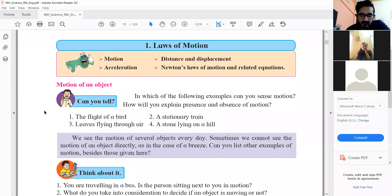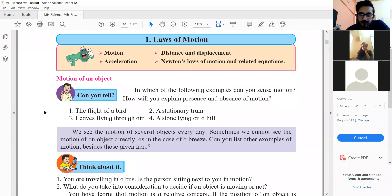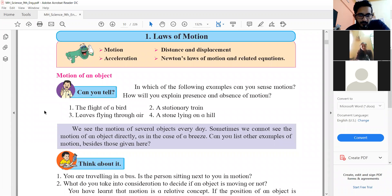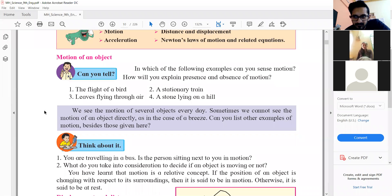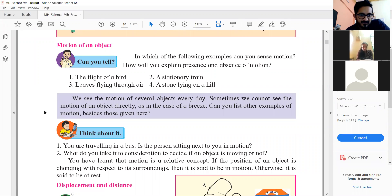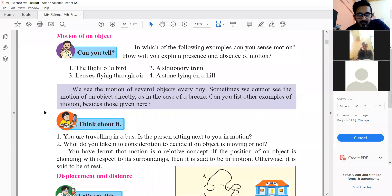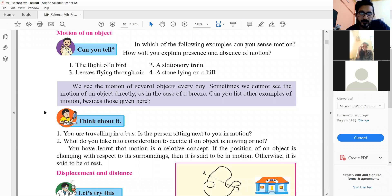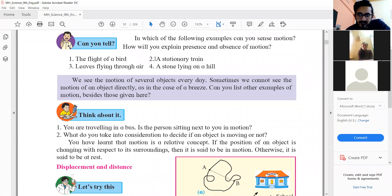So I will just read across. In which of the following examples can you sense motion and how will you explain the presence and absence of motion? A flying of a bird or a stationary train, leaves flying through air or a stone lying on a hill. So what we see here is that there are certain things which are considered stationary.